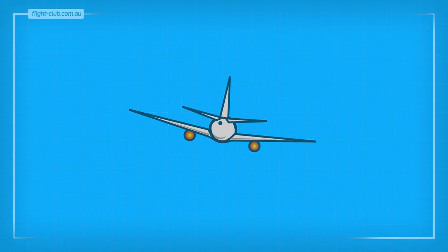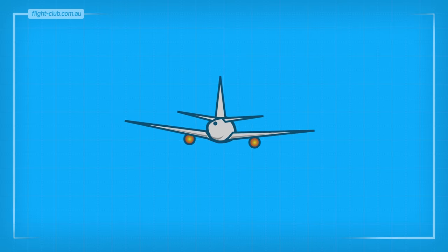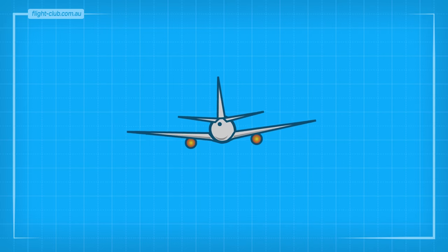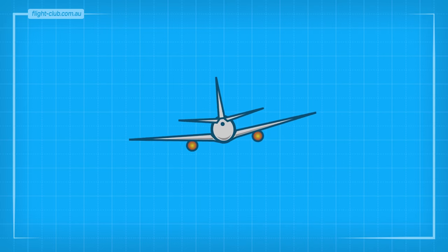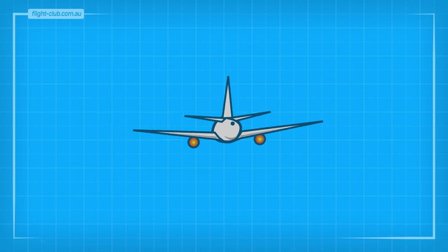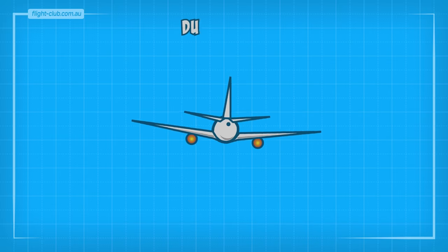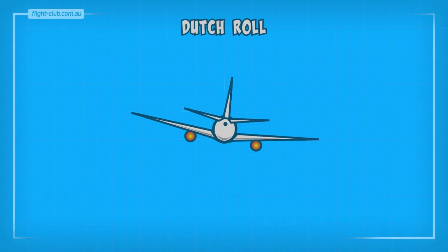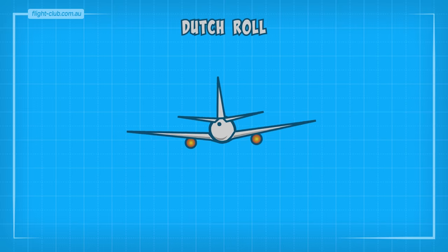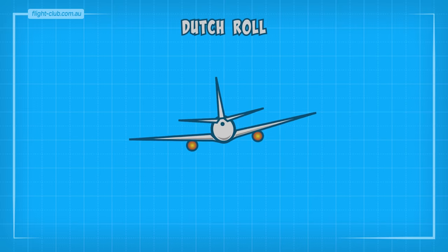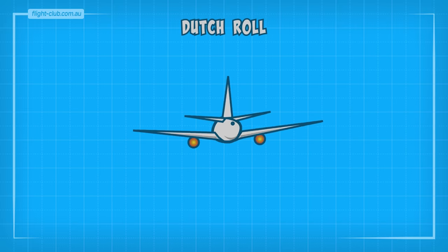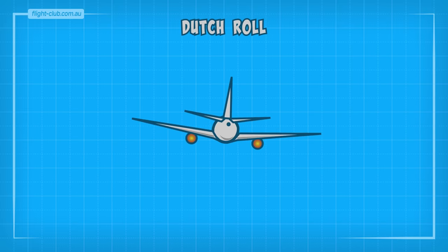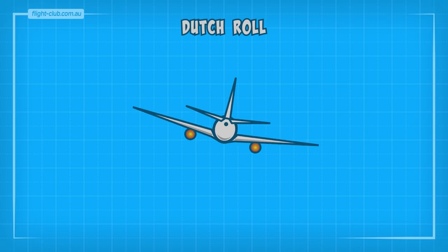Imagine trying to eat your in-flight dinner at the back of this aeroplane. This wallowing effect is called a Dutch roll. But before we show you how the Dutch roll works, let's talk about lateral and directional stability of an aeroplane.